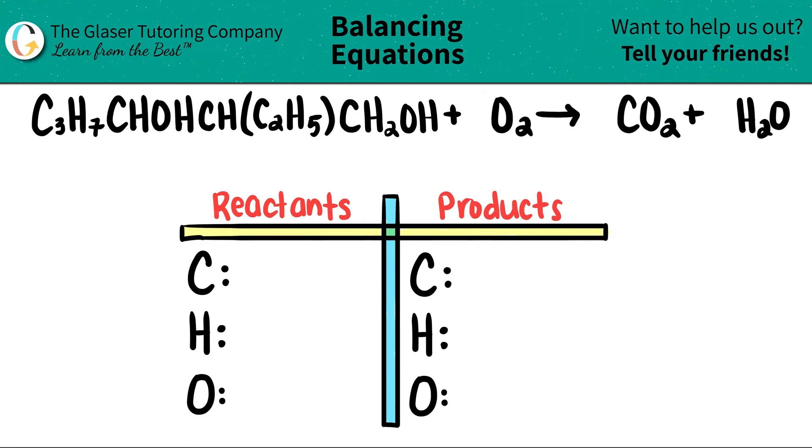Today, we are going to be balancing the equation of C3H7CH0HCH2H5CH2OH plus O2, which will yield CO2 plus H2O.